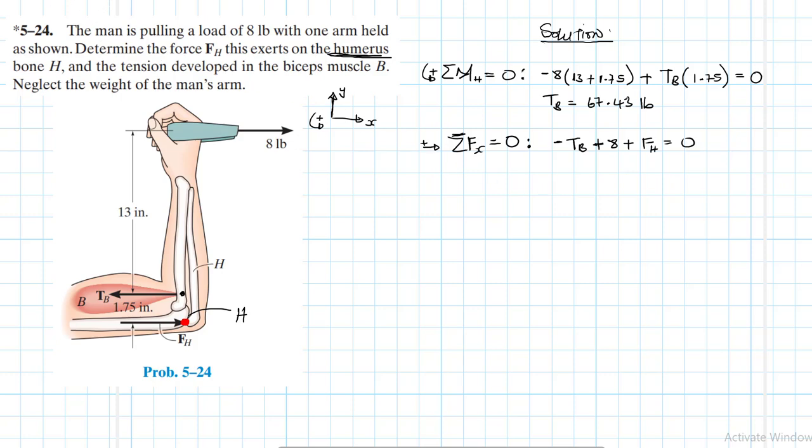So we already have what TB is. TB is this one here. So let's make FH subject to formula. So FH therefore is going to be equal to, we have TB minus, so minus 67.43 plus 8. What do we have? We have 59.43. Yeah so minus 67.43 plus 8, 59.43.